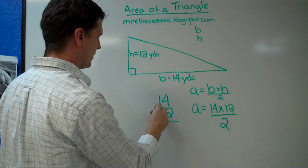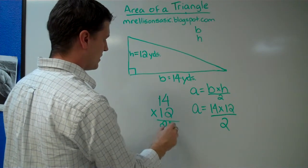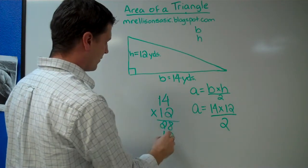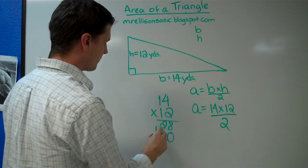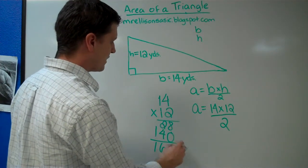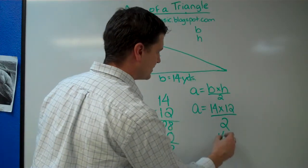Let's remember 4 times 2 is 8, 2 times 1 is 2. And then let's put our placeholder here, our 0. 1 times 4 is 4, and 1 times 1 is 1. Now, we get 168. So, our base and our height multiplied together give us 168.